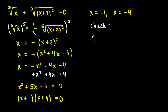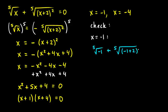Let's check x equals negative 1 first, because that's pretty easy. We get the fifth root of negative 1 plus the fifth root of negative 1 plus 2 squared, and hopefully that equals 0. The fifth root of negative 1 is just negative 1. And over here, negative 1 plus 2 is positive 1, squared is 1, so we just have the fifth root of 1, which is 1. Negative 1 plus 1 equals 0 — so that works.